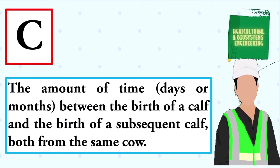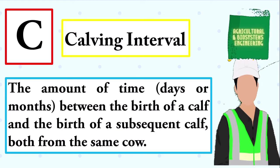The amount of time, days or months, between the birth of a calf and the birth of a subsequent calf, both from the same cow. The answer is calving interval.